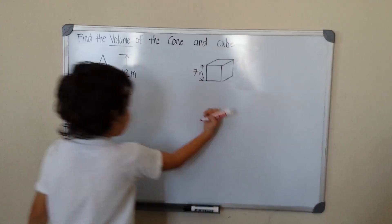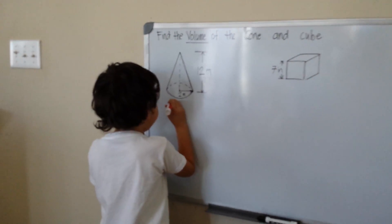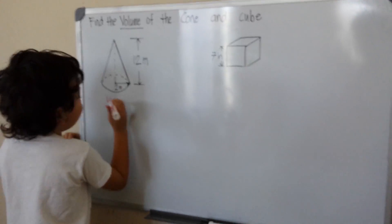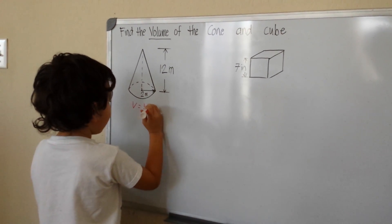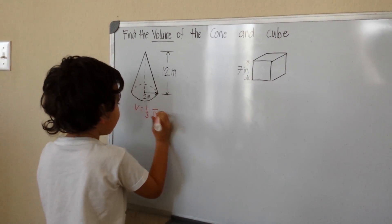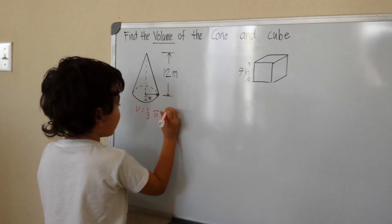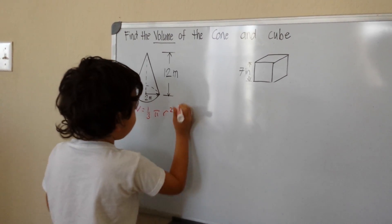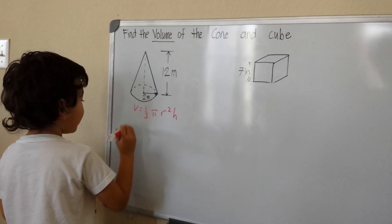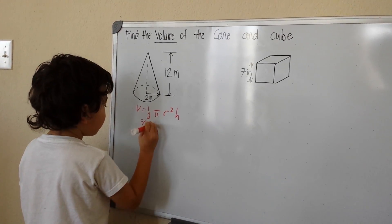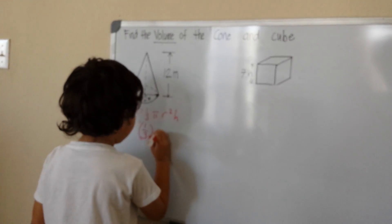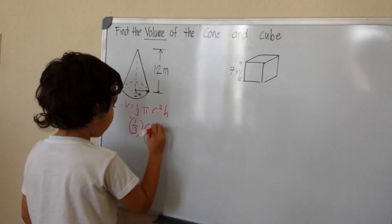So my volume is equal to 1 over 3 times pi times the r squared times the height. So 1 over 3, put the bracket, and then my pi, put it in the bracket, and then my radius.